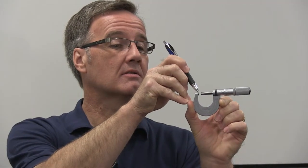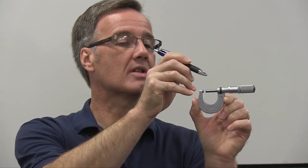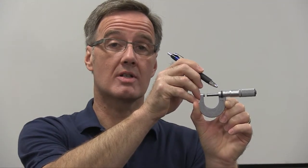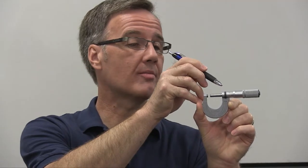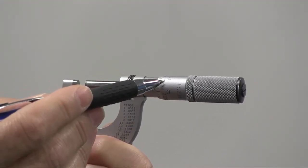Here we have the anvil. It's a measuring face. We have our spindle which rotates. We have a lock in case we need to lock our micrometer to hold the measurement. And here we have the sleeve and of course the thimble.